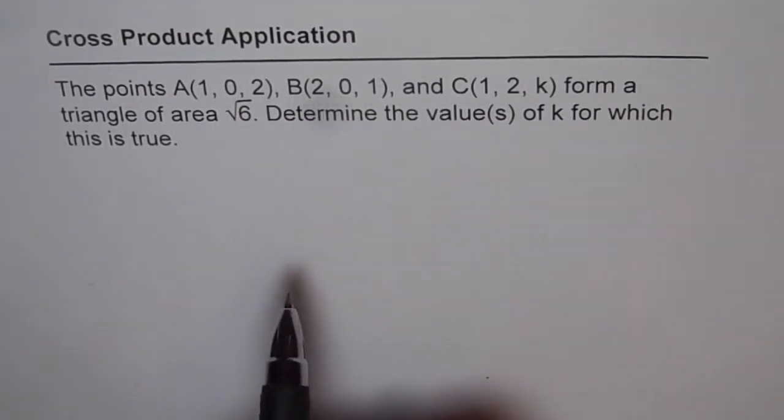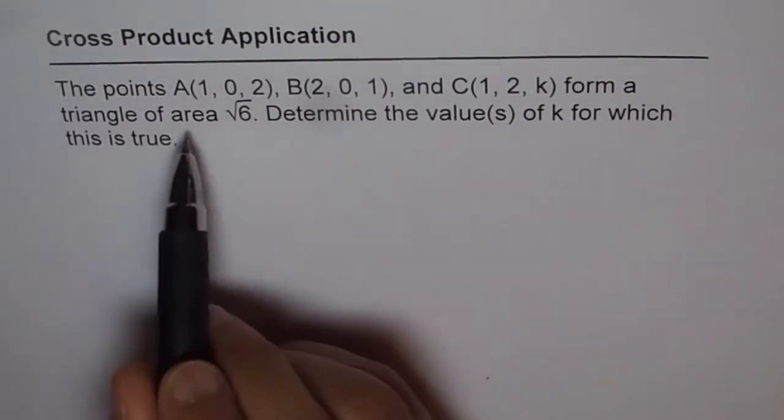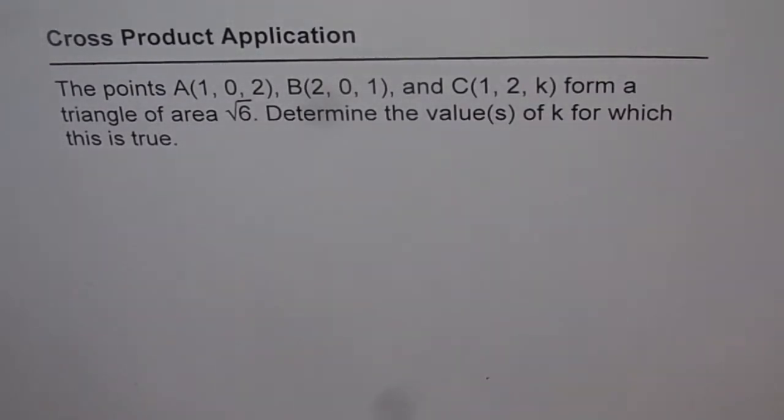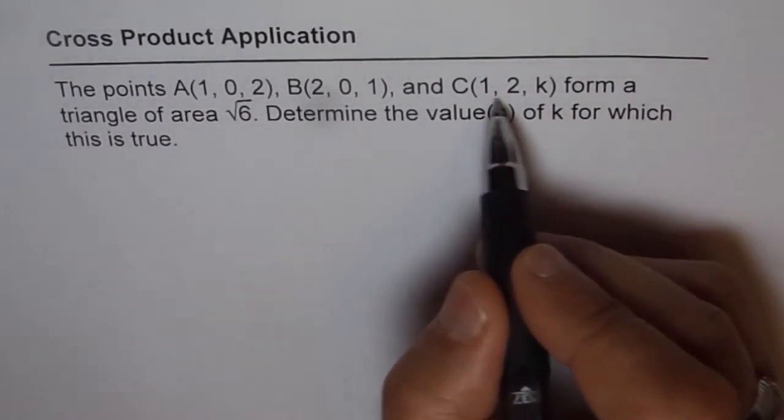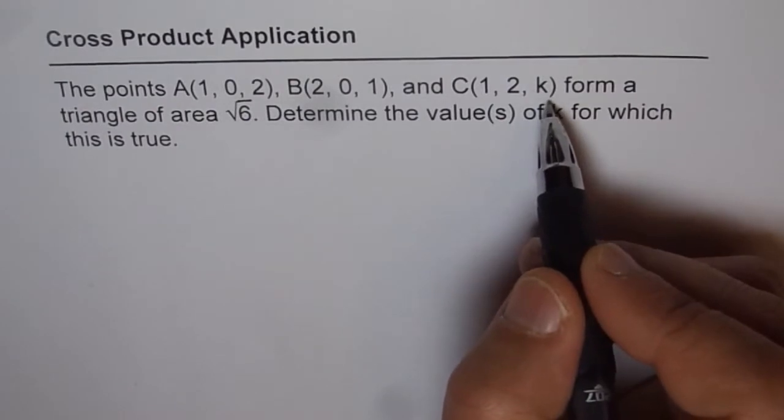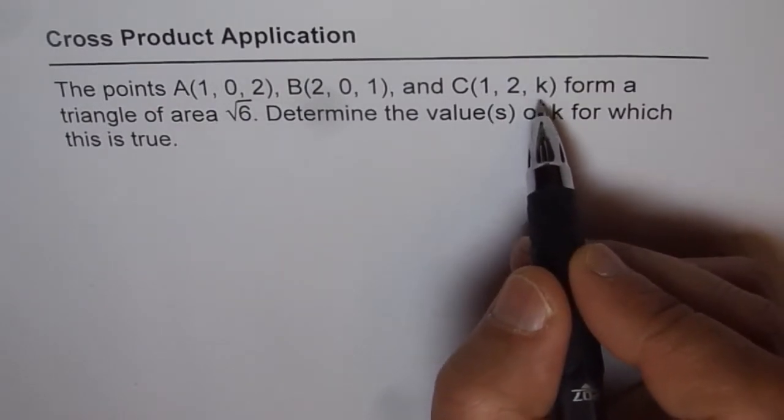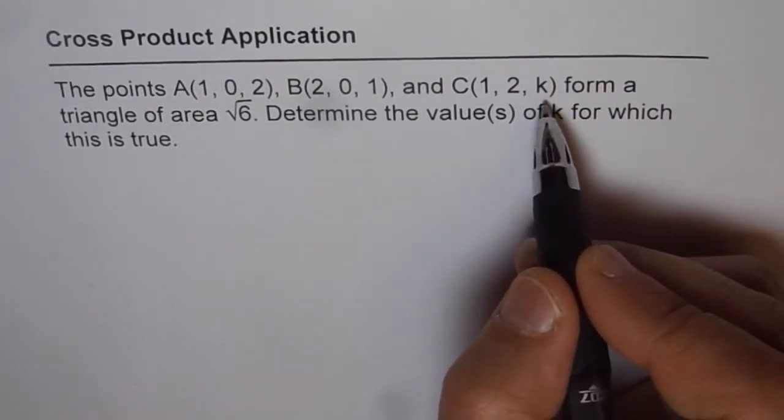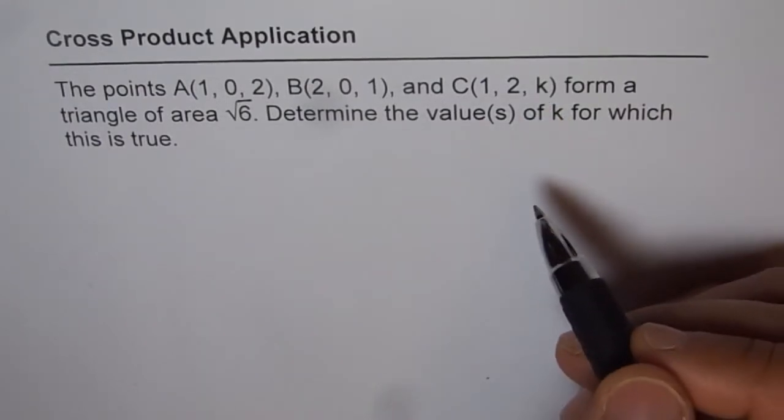We are given three points and the area of the triangle. We need to find the value k. Point C is not fully defined—we don't know what k is. We need to find the value of k which will result in a triangle with an area of √6.